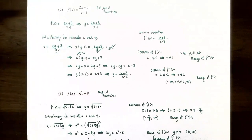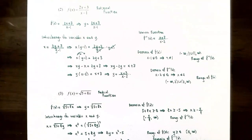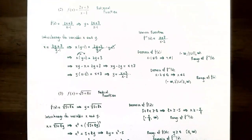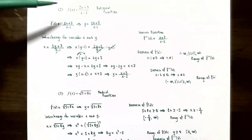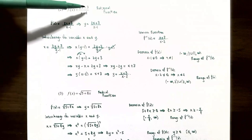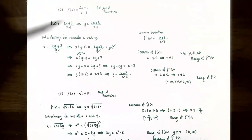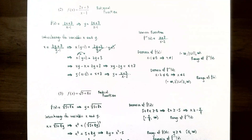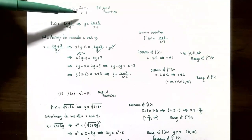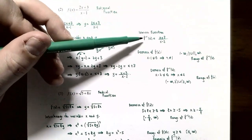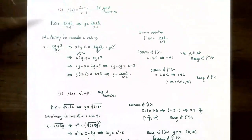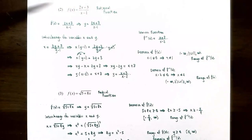To get y by itself, divide both sides by x minus 2. So y equals x plus 3 all divided by x minus 2. This is the inverse function of f of x. So f of x is 2x plus 3 over x minus 1, and the inverse function is x plus 3 over x minus 2 — it is not the reciprocal of the original function; it turned out to be an entirely different rational function.